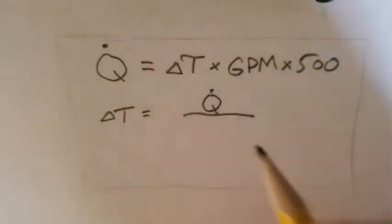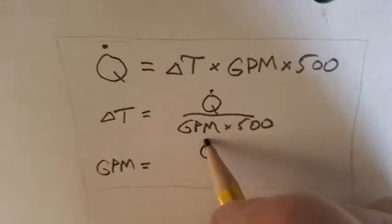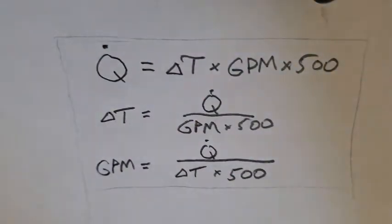Moving the equation around, we can solve for delta T or we can solve for GPM. If we know any two of these, we can calculate the third.